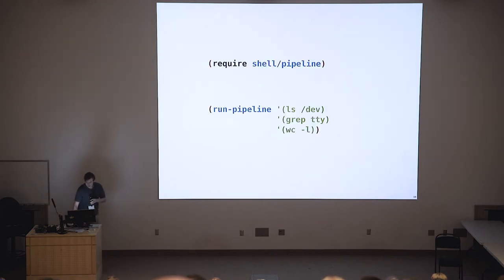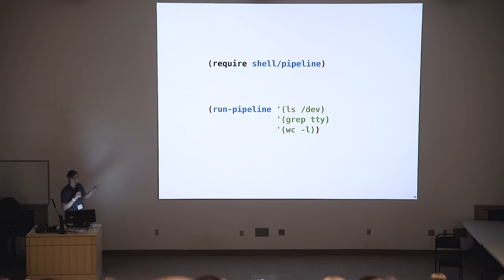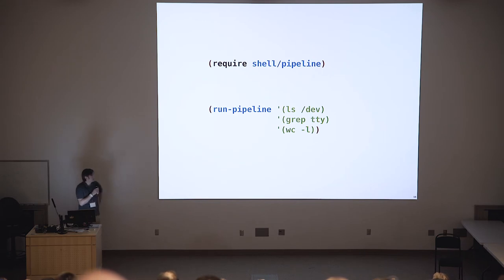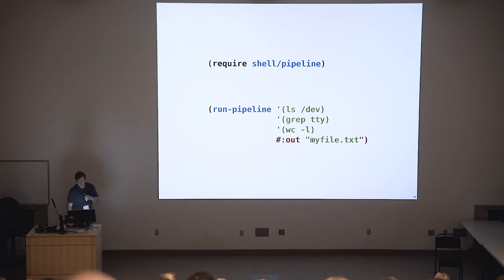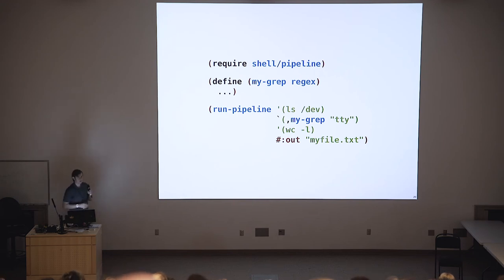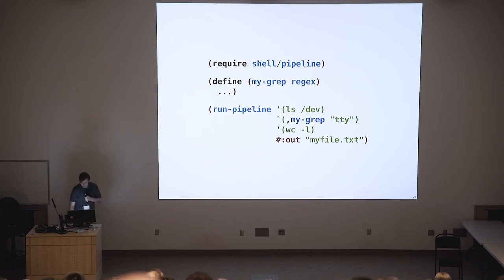So let's look at the pieces. First is shell pipeline. The main function is run-pipeline — you give it specifications of what programs you want to run: ls, grep, et cetera. We can add flags to do output redirection and other things, and we can also put in Racket functions. My grep here is defined as a Racket function, and we can put it in the middle of the pipeline — it just has to read and write to its streams.